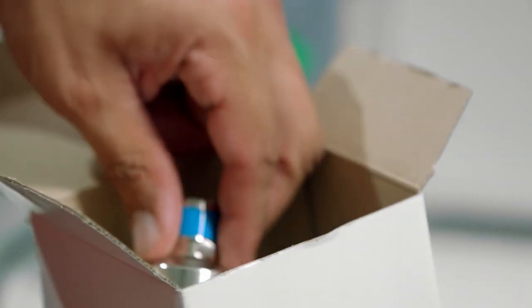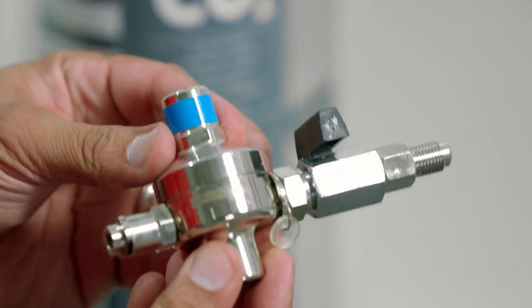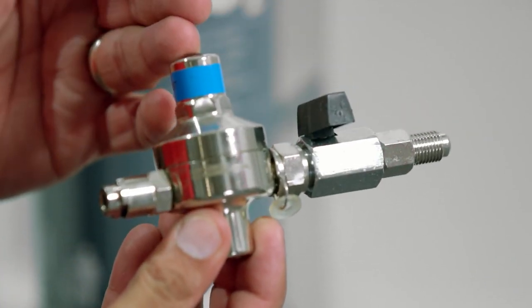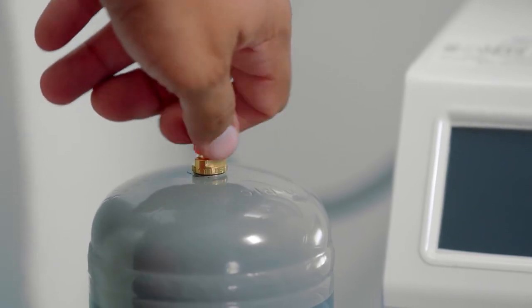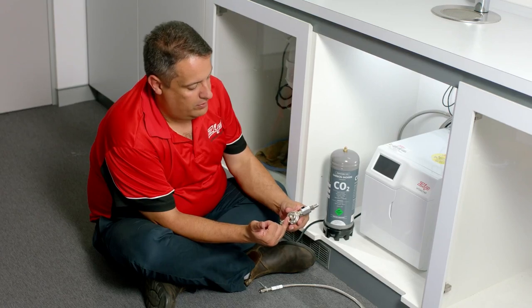To assemble, remove the regulator from the box. This is a preset regulator that is set to 300 kPa. Remove the little red cap off your gas bottle, your CO2 bottle. The regulator will thread onto the bottle.